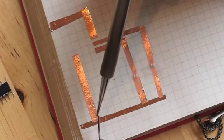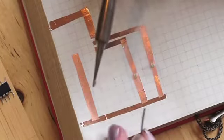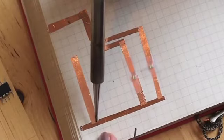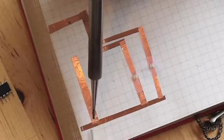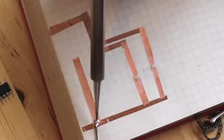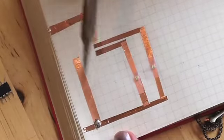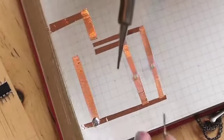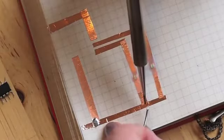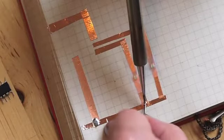So what I found works first is you want to tin your tip so you get some solder on there that's going to help distribute the heat - or so my father, the ham radio operator, tells me. And then I make sure my solder is right ready to go, and then I just lay it down. Then sometimes I'll use the tip to spread it around to make sure that the solder is making a good connection between the two pieces of tape.